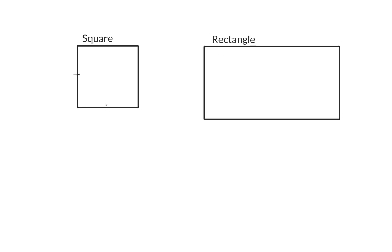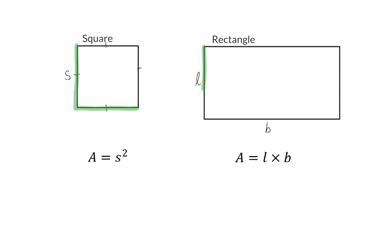The sides of a square are all equal in length and can therefore simply be named the sides. To get the area of a square it will then be side times side, or side squared. For a rectangle we'll use the symbols length and breadth, so the area of a rectangle will be the length multiplied by the breadth.